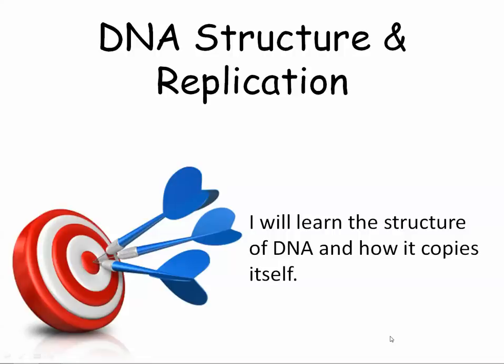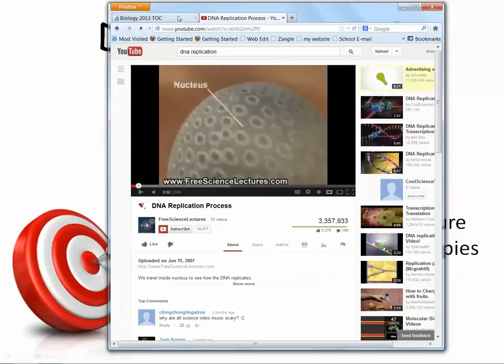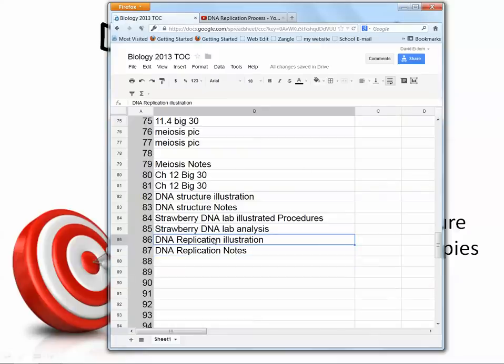Let me go ahead and pull up that table of contents just so you can check and make sure. So here we go. DNA replication notes go on page 87 and later on today you're going to start working on a replication illustration so you have something to use. Quick, nice pictures, that sort of thing. It shouldn't take you too much to fill out your table of contents. It's an entire six words.